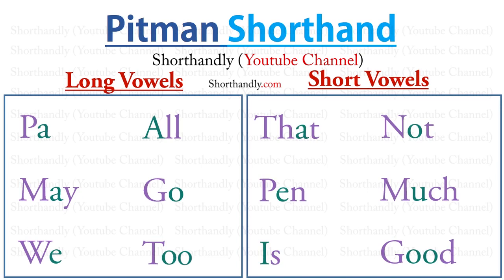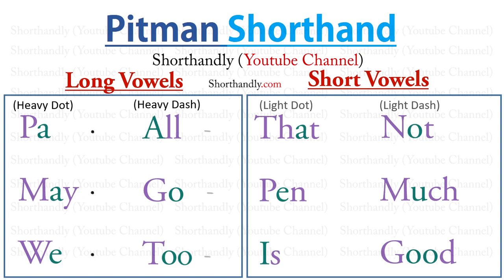Long vowels are represented by a heavy dot and a heavy dash, while the short vowels are represented by a light dot and a light dash. The long vowels PA MAY WE are represented by a heavy dot, and ALL GO TO are represented by a heavy dash, while the short vowels THAT PEN IS are represented by a light dot, and NOT MUCH GOOD are represented by a light dash.